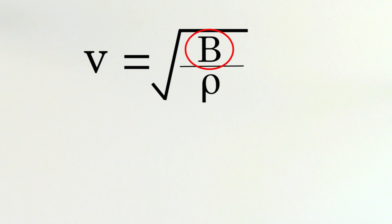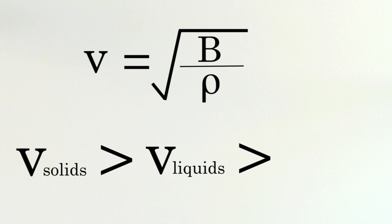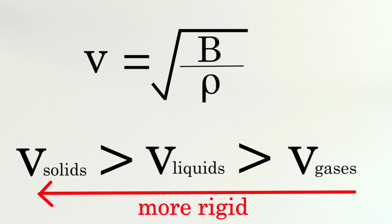In fact, the larger bulk modulus of more rigid materials usually compensates for any larger densities. Because of this fact, the speed of sound is almost always faster through solids than it is through liquids, and faster through liquids than it is through gases, because solids are more rigid than liquids, and liquids are more rigid than gases.